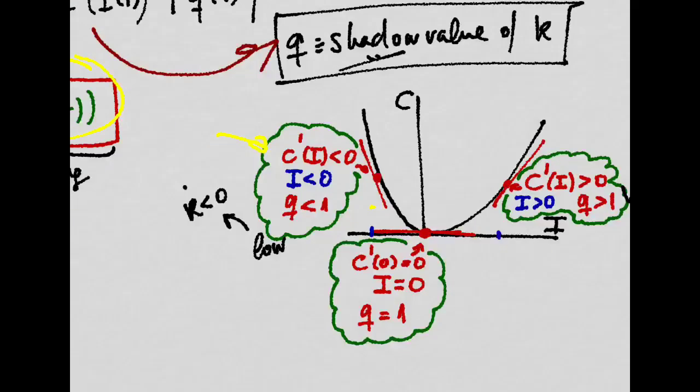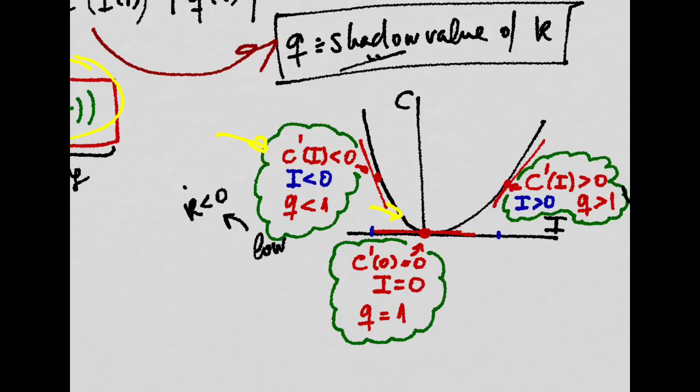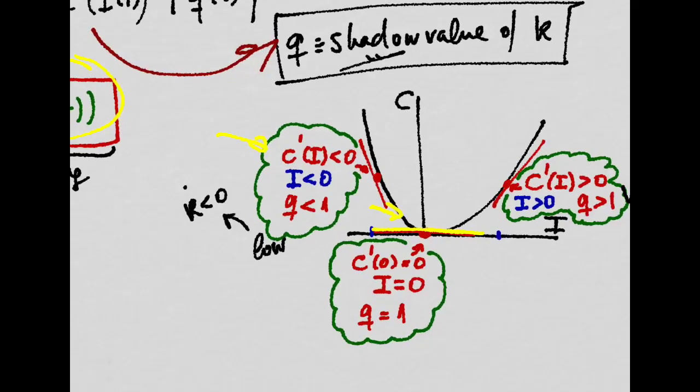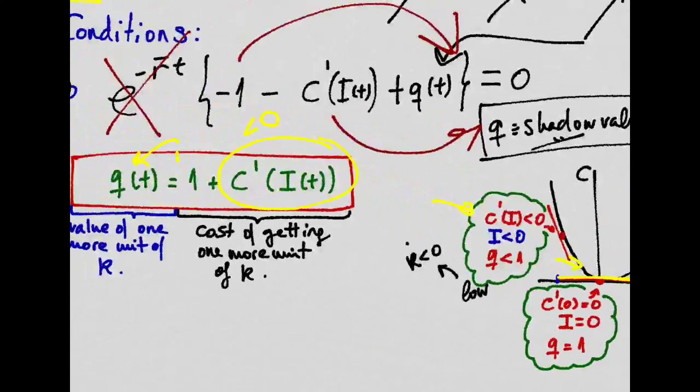Or in this case, investment is already negative, so disinvest less, until the minimum of the cost function is reached at the point where this slope is zero. That is, this is exactly zero and Q is equal to one.